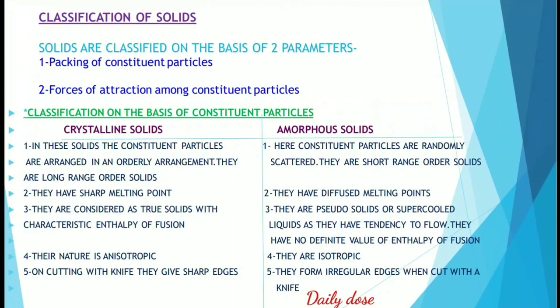Crystalline solids are anisotropic in nature. Anisotropic means that when properties of a material vary with different crystallographic orientations, the material is known as anisotropic. Amorphous solids are isotropic — isotropic means that when properties of a material are the same in all directions, the material is termed isotropic.